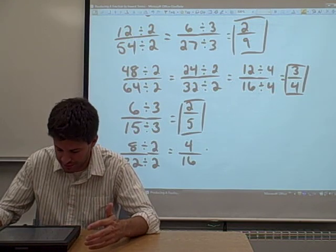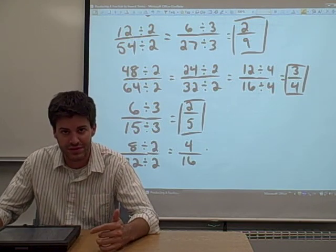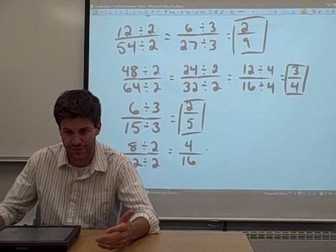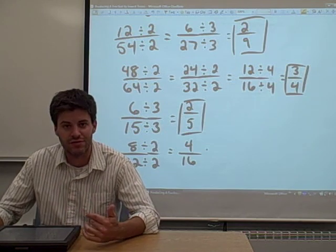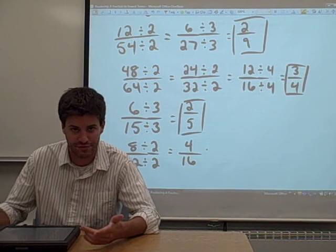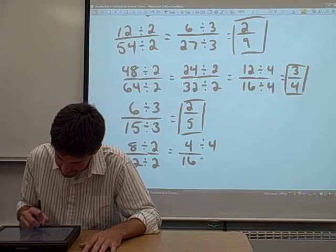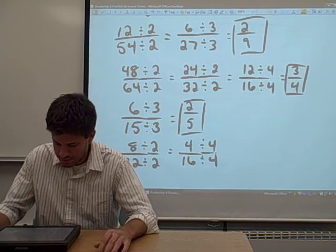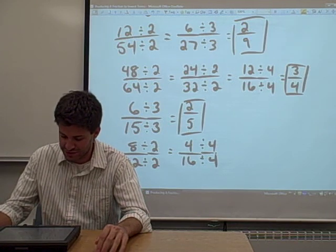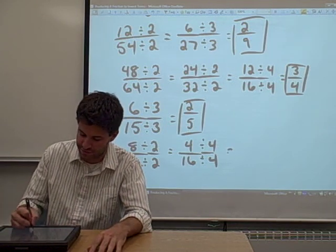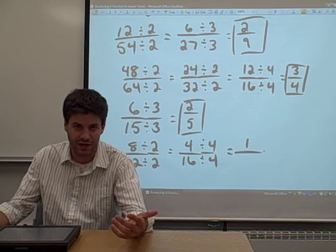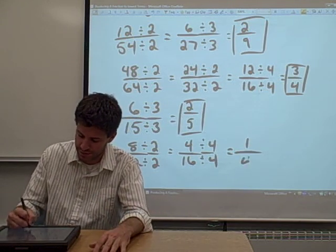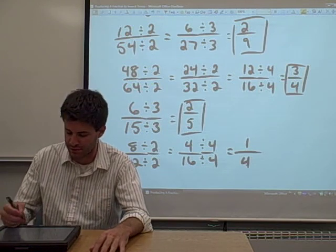Then we have to look at that 4 sixteenths and ask, is that in lowest terms? The answer is no because this can actually be divided even further. This 4 sixteenths you can divide by 2. You can even divide both the numerator and the denominator by 4. So let's give that a shot. Divide 4 sixteenths both the numerator and the denominator by 4. 4 divided by 4 equals 1. 16 divided by 4 of course equals 4. And that looks like that is in lowest terms.